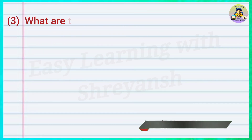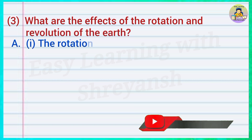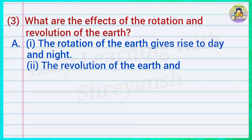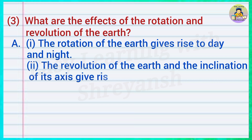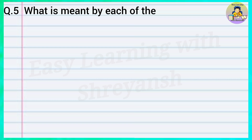Three: What are the effects of the rotation and the revolution of the earth? Answer: The rotation of the earth gives rise to day and night. The revolution of the earth and the inclination of its axis give rise to the cycle of seasons.